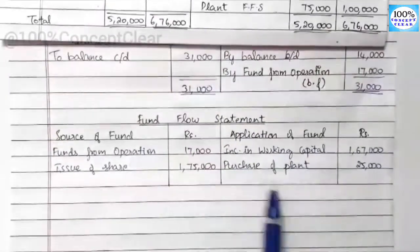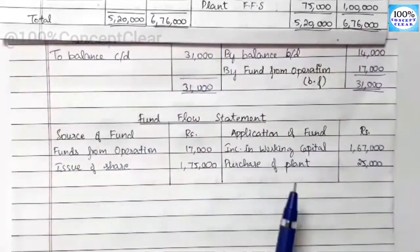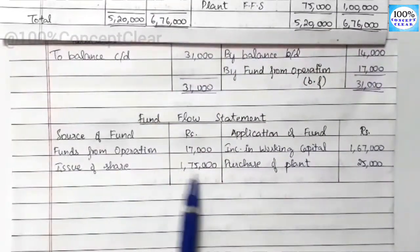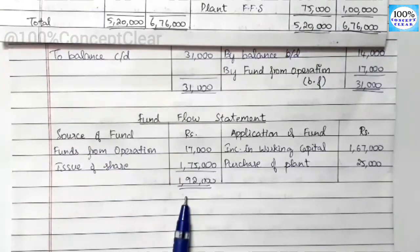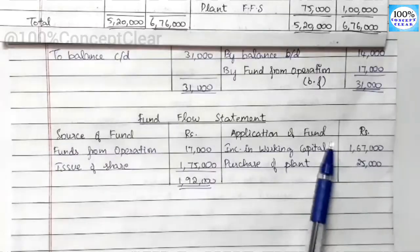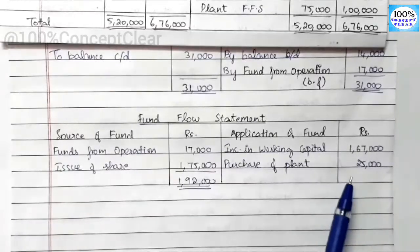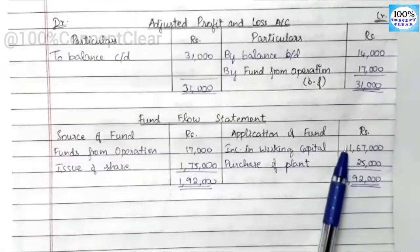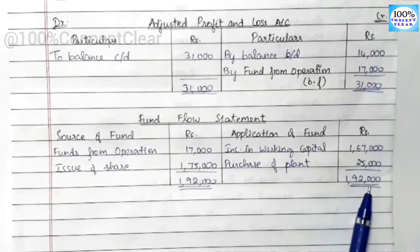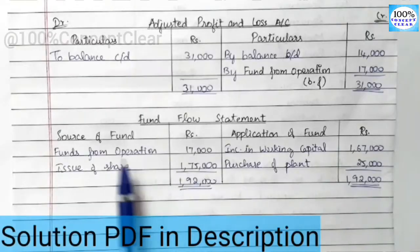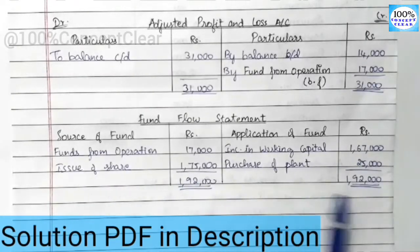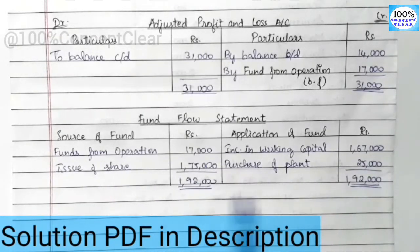Now we tally the fund flow statement. First, we add the sources of funds — total sources are 1,92,000. Then we add the applications. Both sources and applications should total 1,92,000, confirming the fund flow statement is balanced and correct.